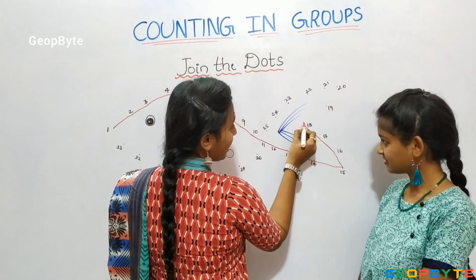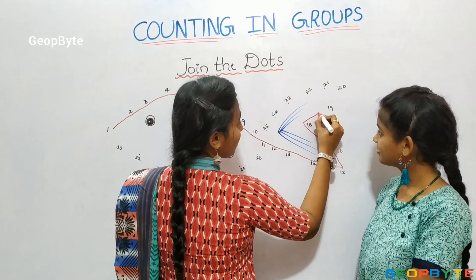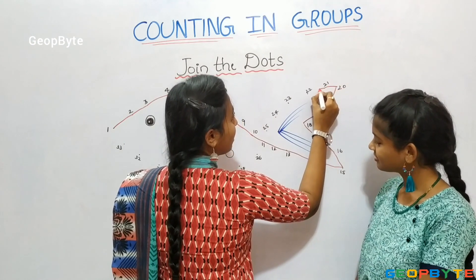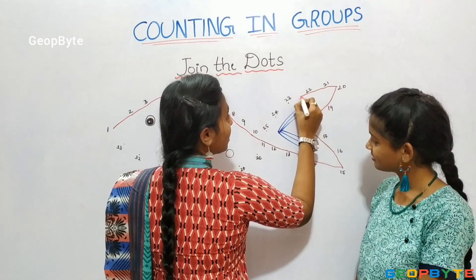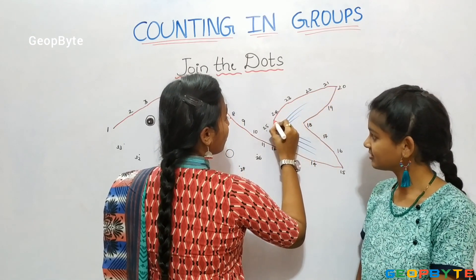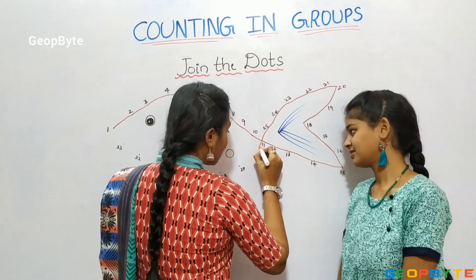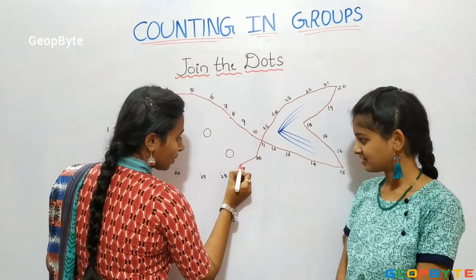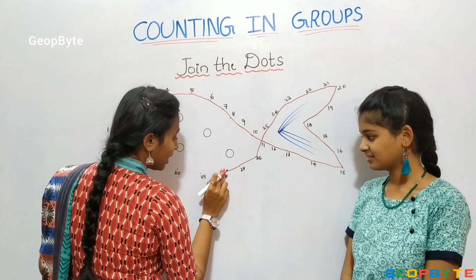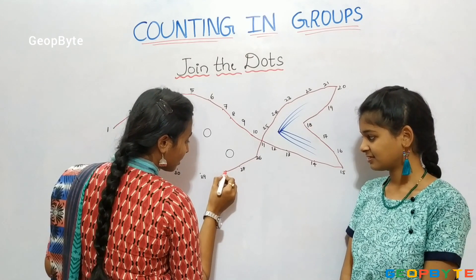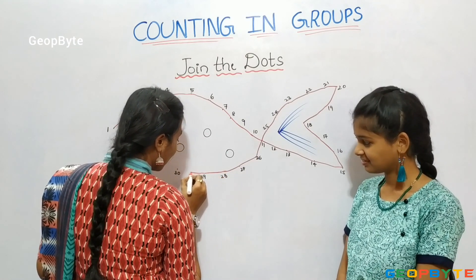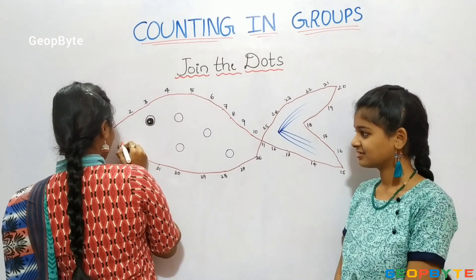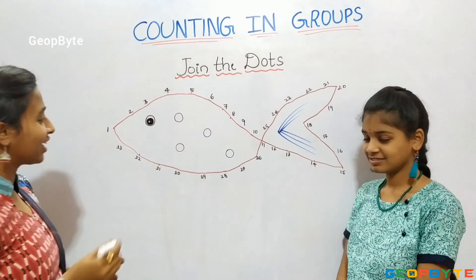17, 18, 19, 20, 21, 22, 23, 24, 25, 26, 27, 28, 29, 30, 31, 32, 33 and coming to 1.